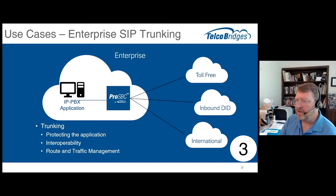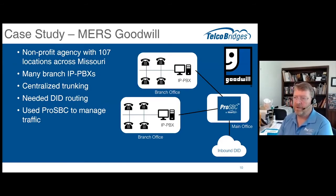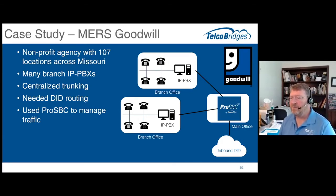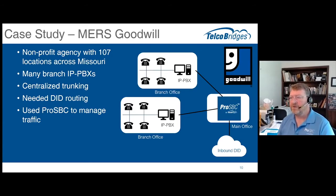This is a fairly popular one. For a customer example, we worked on a project with MERS Goodwill. They're a not-for-profit agency in Missouri and they actually had 107 different locations with IPPBXs — a hybrid setup with multiple operators. The particular case they needed help with was inbound DIDs and routing them to the appropriate branch office.